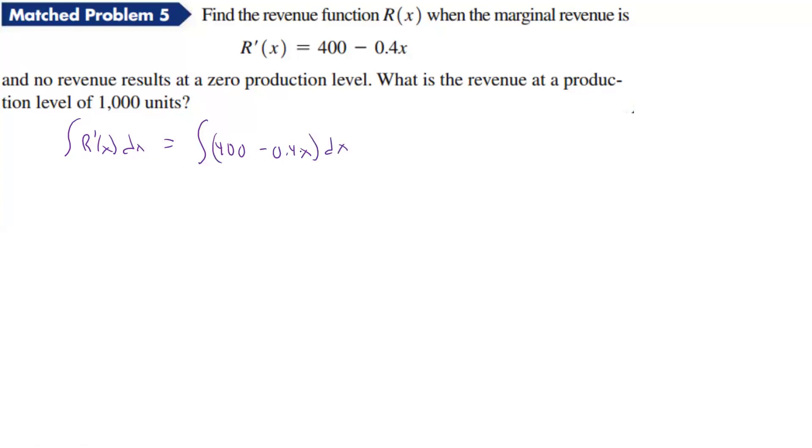Now what I could do is I could split it apart. That integral we know is going to be r of x after we do it, but now that's really going to be equal to, if we split that out, 400 times the integral of dx minus 0.4 integral of x dx.